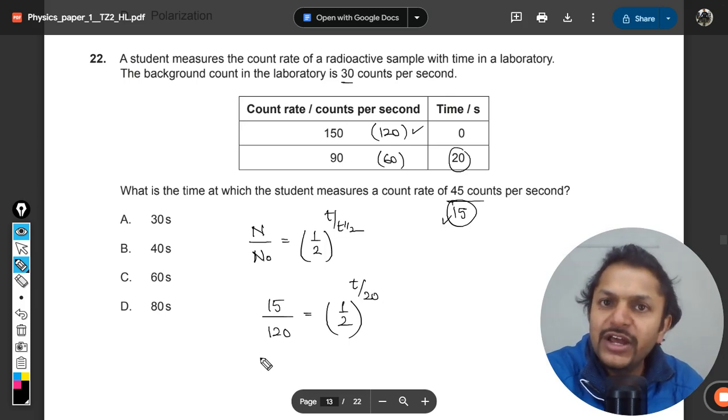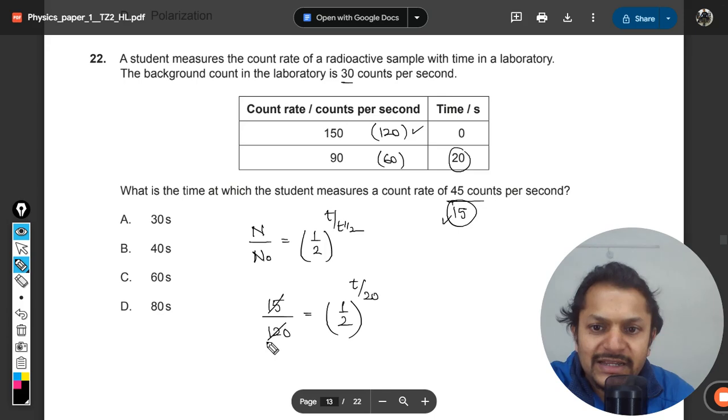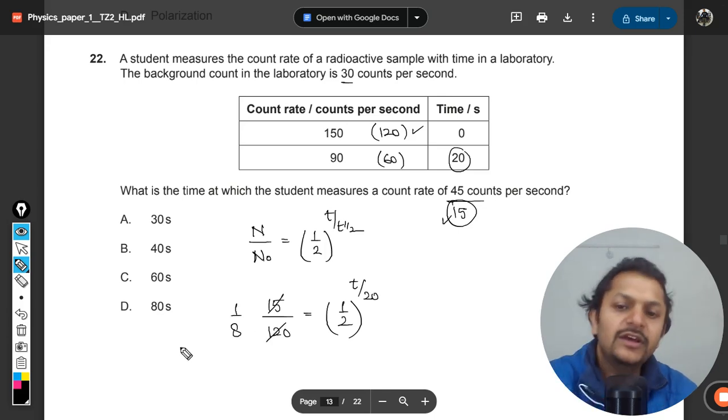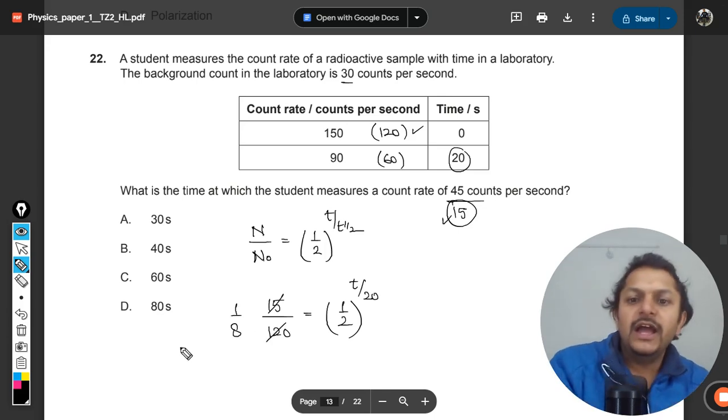Now we want to solve this equation and we will have our answer. 15 divided by 120 gives us 1/8.